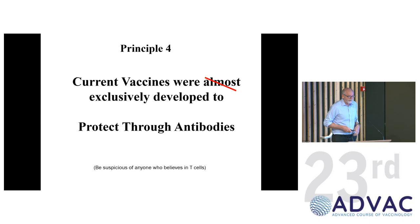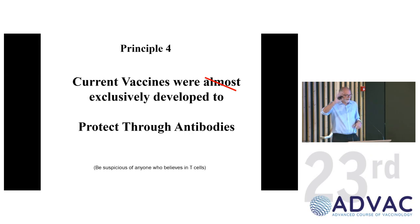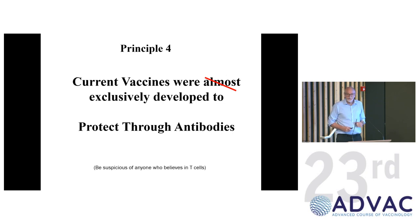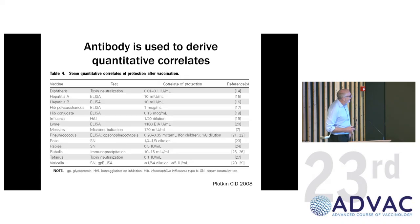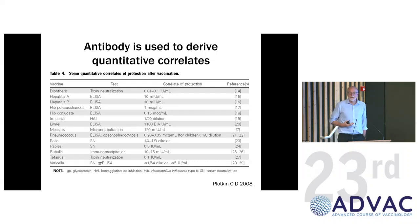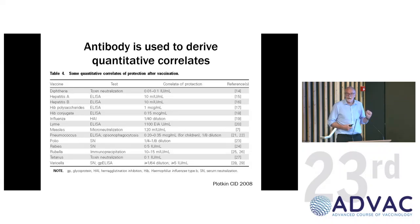Almost all — possibly all — of the vaccines that are used protect through antibody. Essentially, we're making vaccines that protect through antibody responses. So be suspicious of anyone who says vaccines work through T cells. This is the list of correlates used across many childhood vaccines, and you can see they're all antibody correlates — levels of antibody which have been established and accepted by regulators, meaning you can license vaccines as long as you reach these levels of antibody.